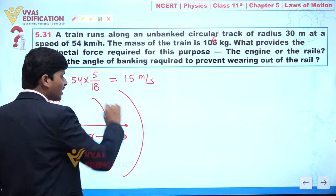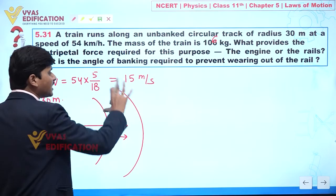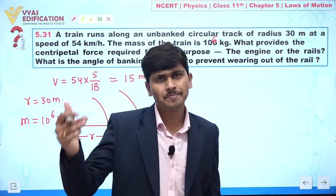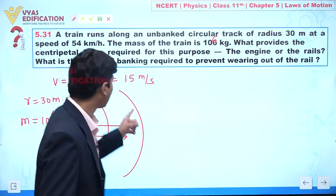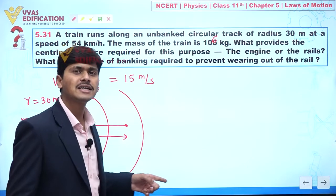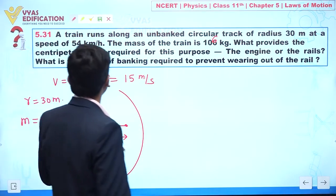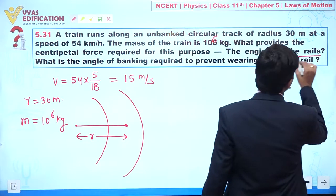We can see when the train is actually moving in a circular path, at that time the outer rail of that path provides the necessary centripetal force. So I can say here definitely the centripetal force is provided by the rails.